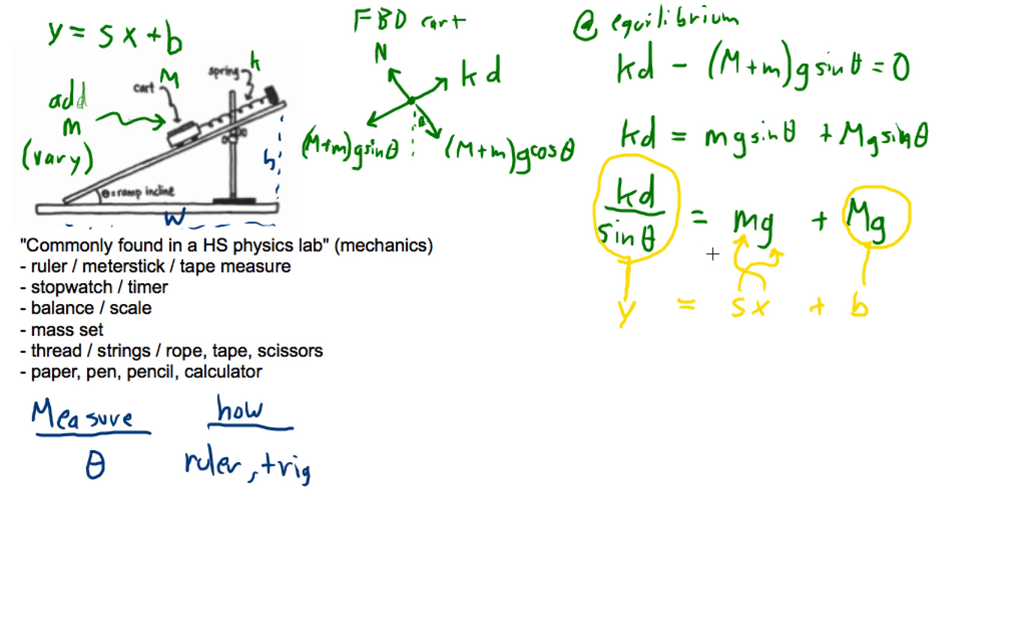What else do we need to measure? K is known, so now we need to measure the added mass little M with a balance. Now if there's a mass set they will have specified masses, so maybe you don't need to measure it with a balance. But they say to tell how you're going to measure these things. So I'm just going to say we'll do the double check and measure a little M with a balance each time. And then what else do we need to measure? We need to measure D.